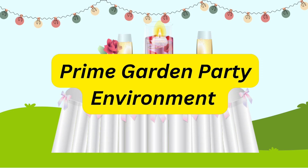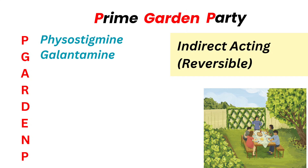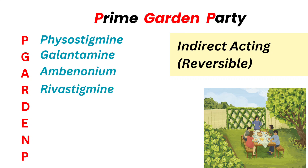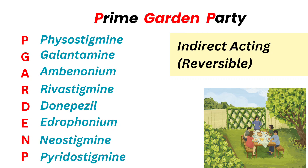The prime garden party includes the reversible agents: P for physostigmine, G for galantamine, A for ambenonium, R for rivastigmine, D for donepezil, E for edrophonium, N for neostigmine, and P for pyridostigmine.